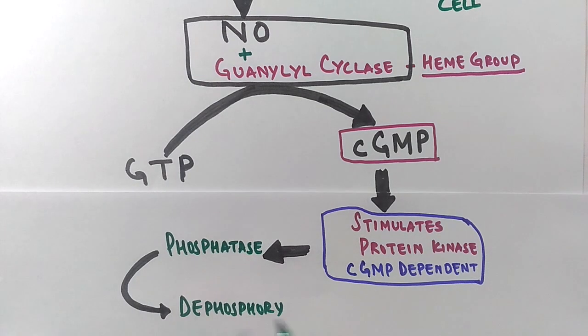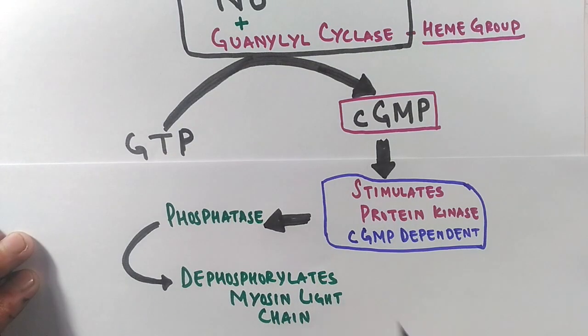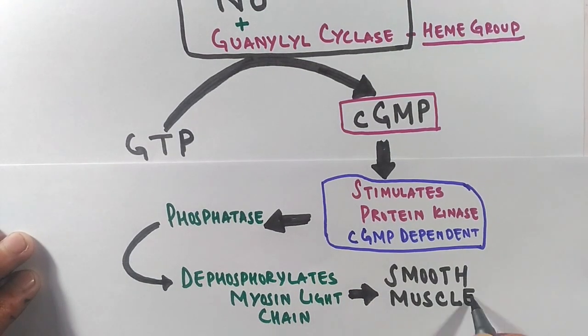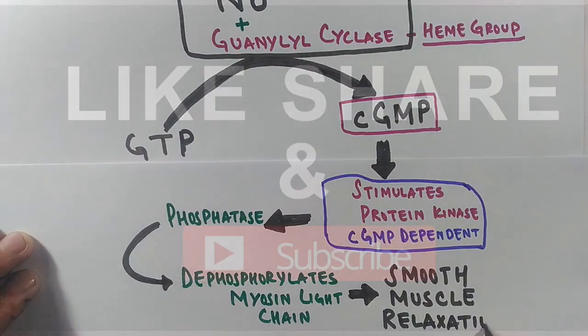This MLCP enzyme dephosphorylates the myosin light chain, thereby inhibits the contraction, which keeps the smooth muscle relaxed.